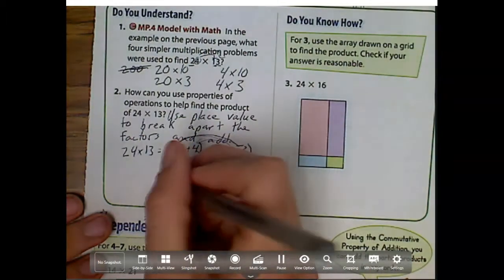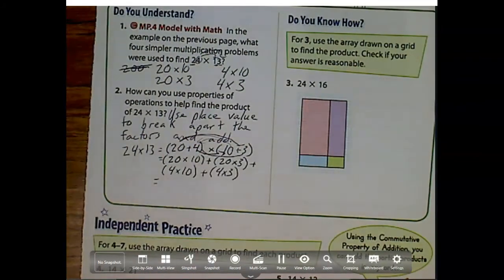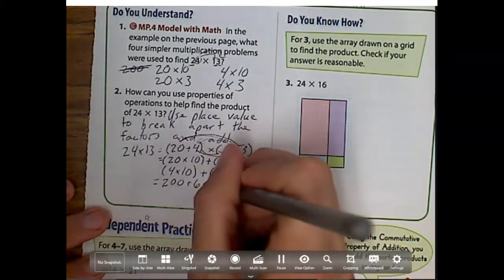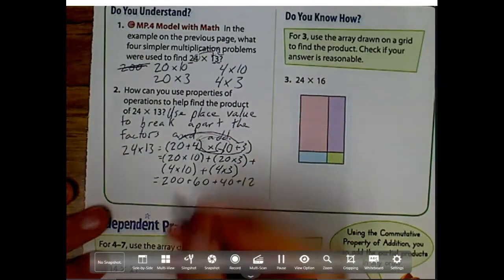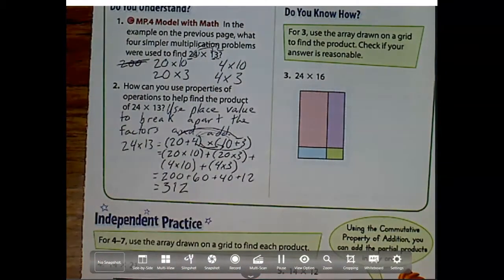And then what do I get when I add all those up? Well, what I will have is 200 plus 60 plus 40 plus 12. So 200 plus 60 plus 40 plus 12, and then when I add them all up, what do I get? I'll get 312. So it's a lot of work, that's why I use these models because it's really going to show us what's going on.